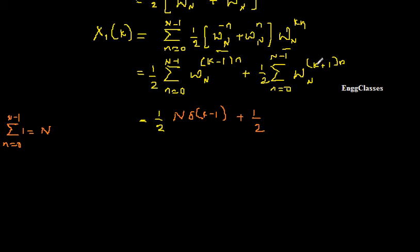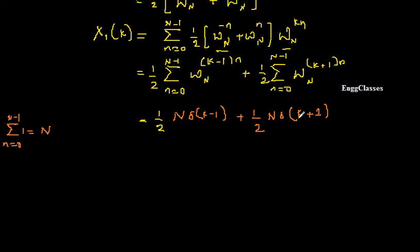Similarly, putting k = -1 in the second summation, I get W_N^0 = 1 and the sum equals N. Under the condition k = -1, I write this as N * δ(k+1), because when k = -1, δ(0) = 1. So the final expression for X1(k) = (1/2) * N * δ(k-1) + (1/2) * N * δ(k+1).